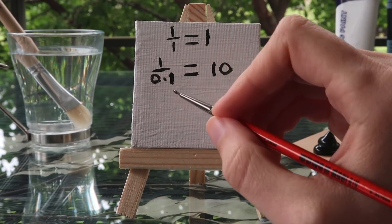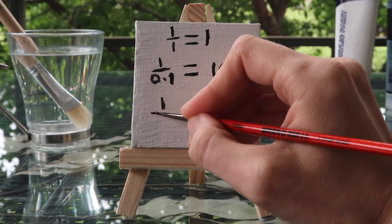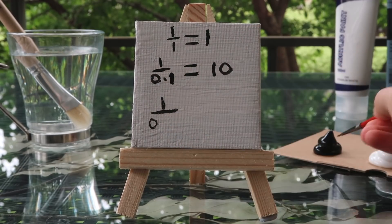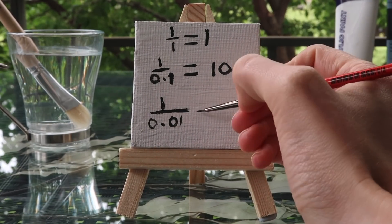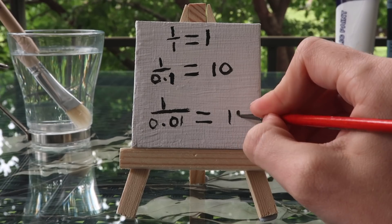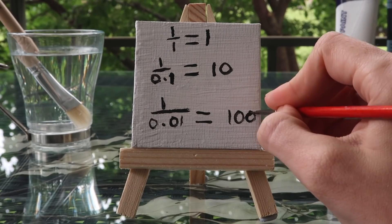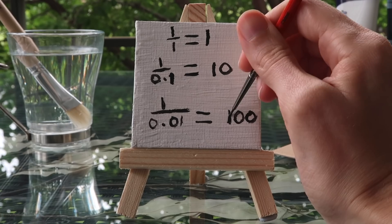We can move the decimal point over 1 again and have 1 divided by 0.01. The answer to that is 100. Our answer gets 10 times bigger every time our denominator gets 10 times smaller.